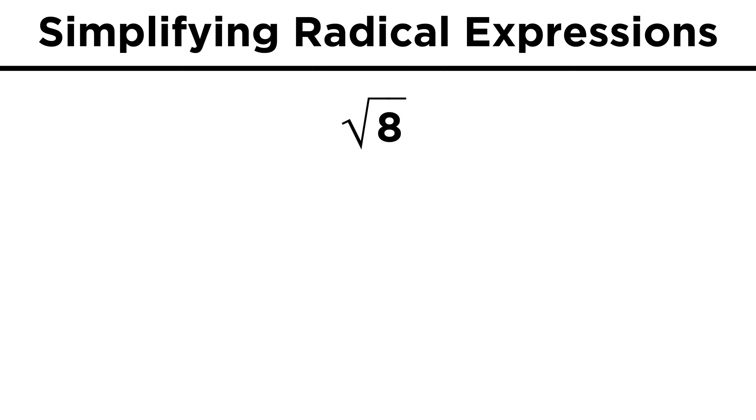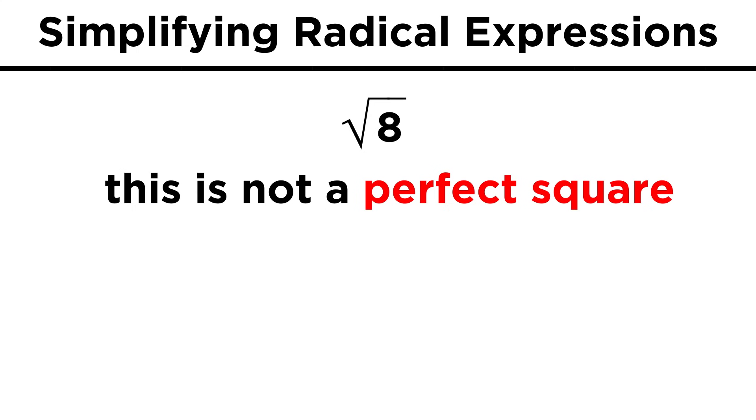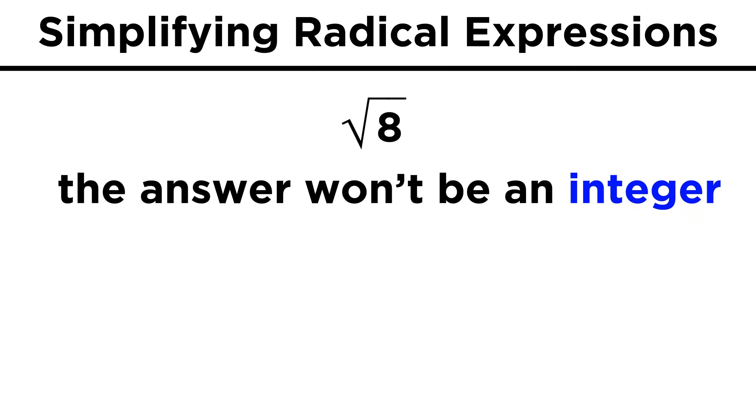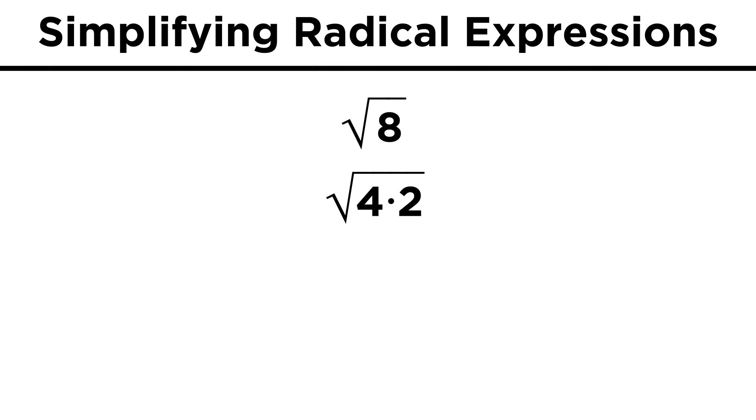We should also note that radical expressions, as we often call them, can sometimes be simplified. Take something like root eight. Eight is not a perfect square, so we can't get a neat and tidy answer when we take its square root, but we can change eight into four times two. The reason we would want to do this is that root four times two is the same as root four times root two, and root four does work out nice and tidy, since it's equal to plus or minus two. So root eight can be simplified to become plus or minus two root two.